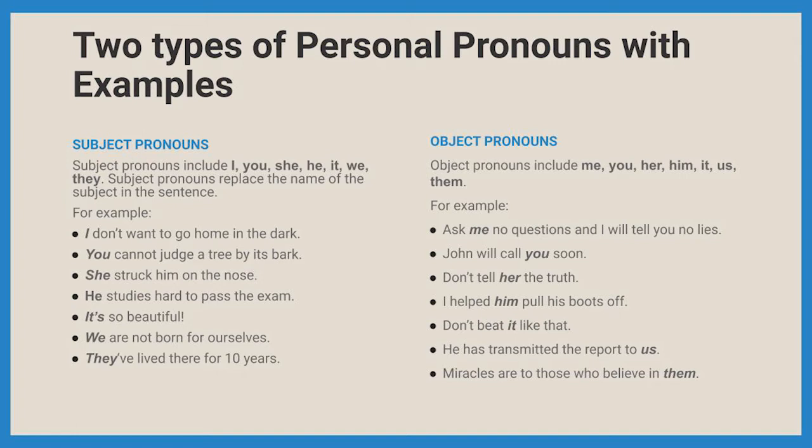Similarly, object pronouns are used when a person, animal, or thing is the object of the sentence. For example, 'Ask me no questions and I will tell you no lies.' Who should the questions not be asked of? The object, me. Hence, me is the object pronoun.